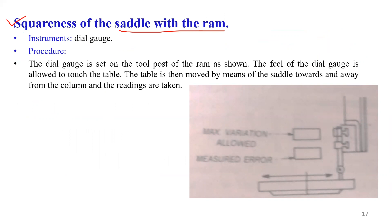Another test is squareness of the saddle with the RAM — checking the perpendicularity of the saddle with the RAM. We require a dial gauge. The dial indicator is mounted on the RAM and its feeler is made to touch the top surface of the saddle. The table is then traversed perpendicular to the longitudinal direction, that is towards or away from the column in the crosswise direction, and readings from the dial indicator are noted.